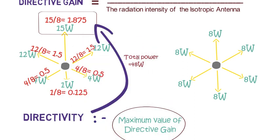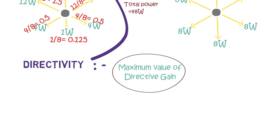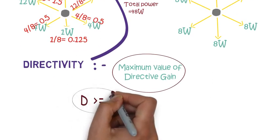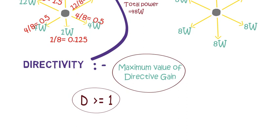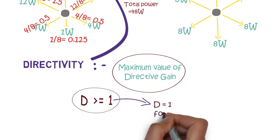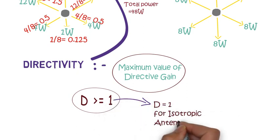From here we can easily deduce that the directivity is always greater than or equal to 1. For the isotropic antenna, directivity will be 1, and for any other antenna its value will be larger than 1.